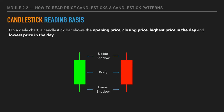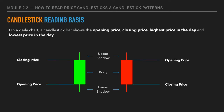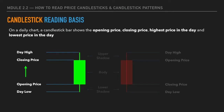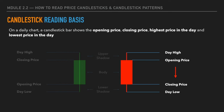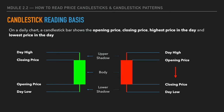On a daily chart, a candlestick bar basically gives you four pieces of important information on the market price: first, you get an opening price; then a closing price; the highest price of the day; and the lowest price of the day. When you see a green candle bar on a daily chart, it means that during the same day the price goes up and closes higher. On the other hand, when you see a red candle bar, it means the price goes down and closes lower than the opening price.